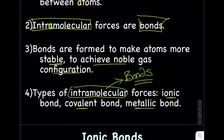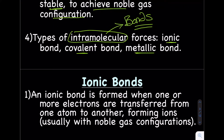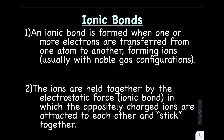The first bond type we're going to talk about is the ionic bond. An ionic bond is formed when one or more electrons are transferred from one atom to the other, forming what we call ions. Ions have a negative or a positive charge, and they are held together by what we call an electrostatic force.